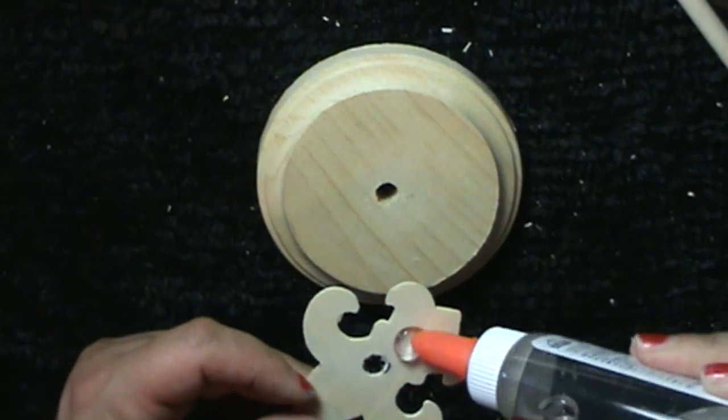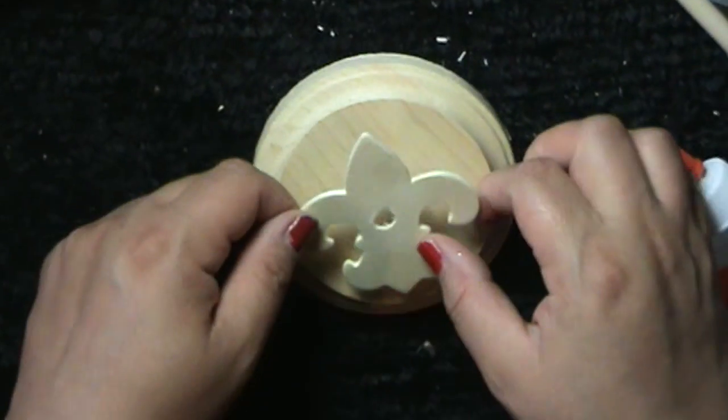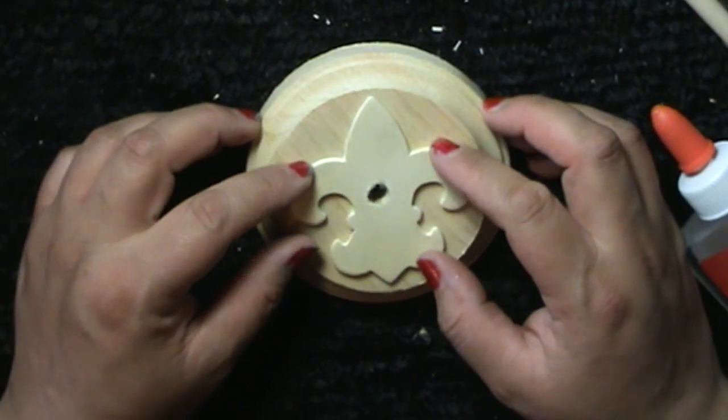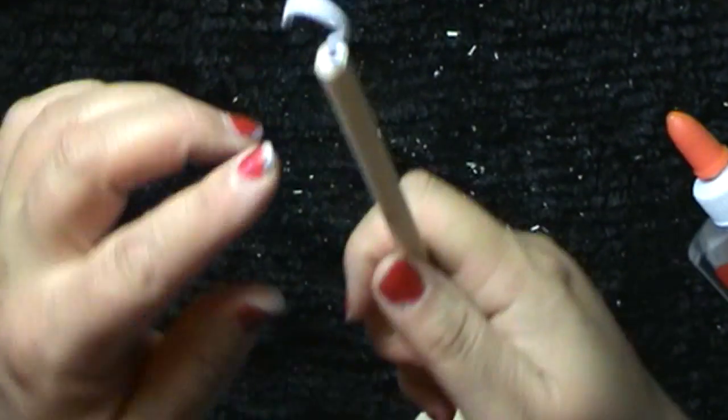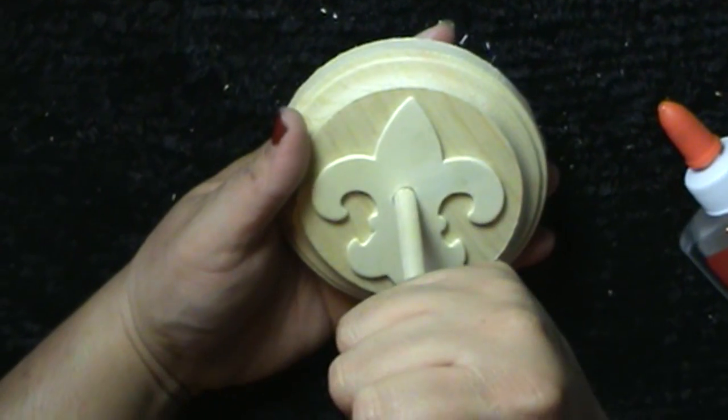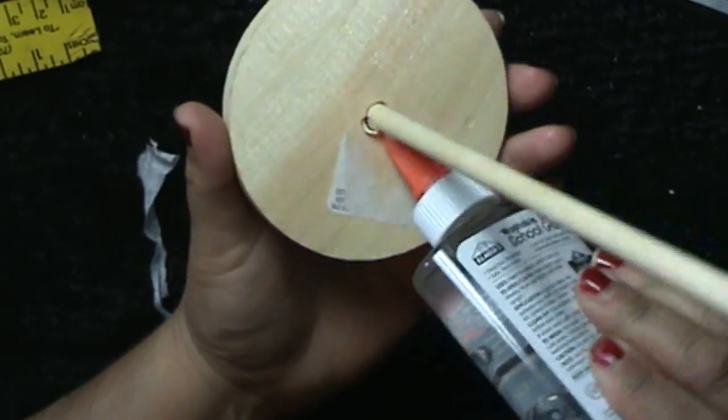And now we're ready to assemble all of our pieces. Place some glue at the bottom of the wooden decorative piece and put it on top of the circular wooden piece. Introduce a wooden dowel.